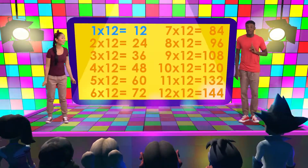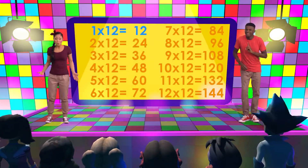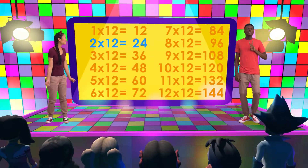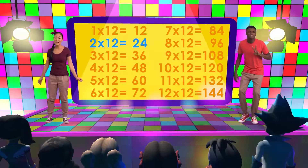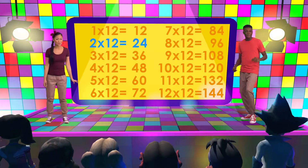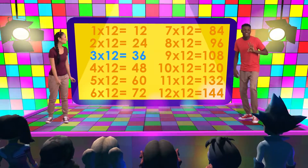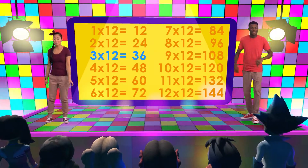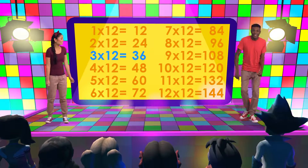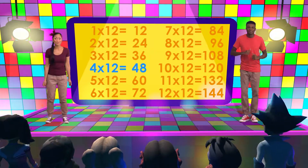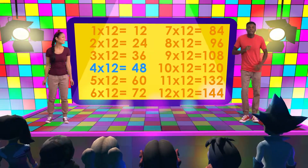1 times 12 is 12. 2 times 12 is 24. 3 times 12 is 36. 4 times 12 is 48.